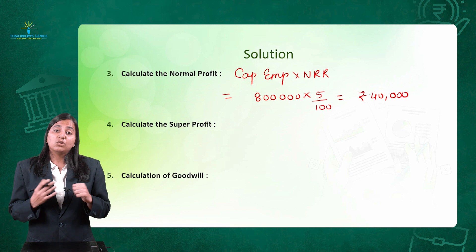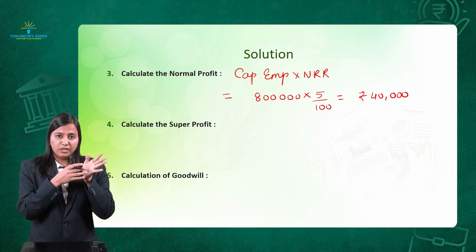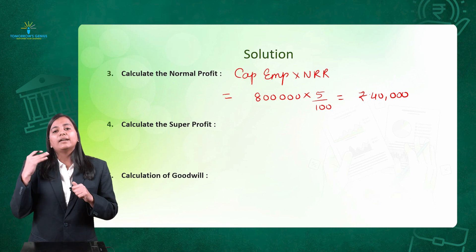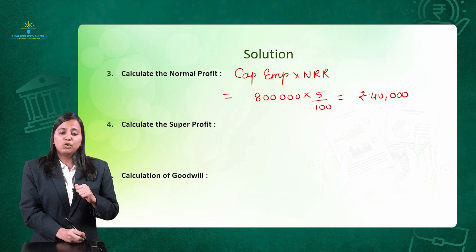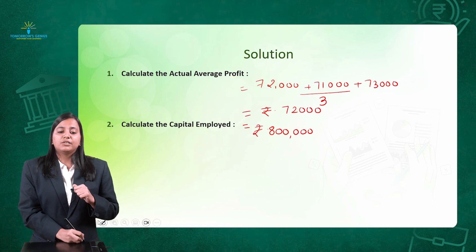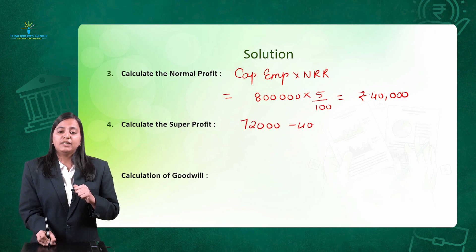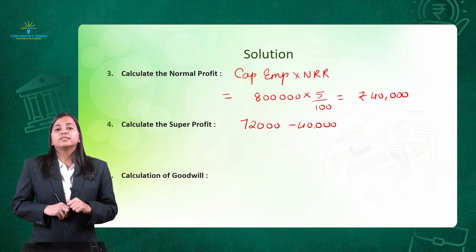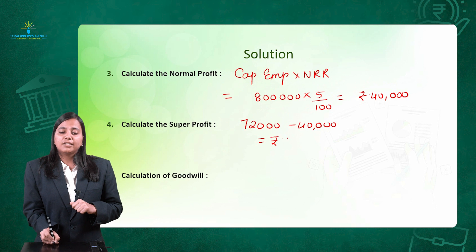Step number 4: calculation of super profit. It is given by average profit from step 1 minus normal profit from step 3. Average profit is 72,000 and normal profit is 40,000. So super profit comes out to rupees 32,000.